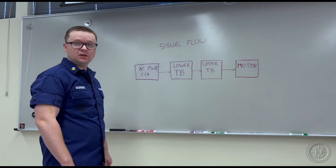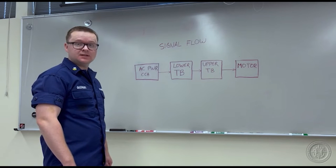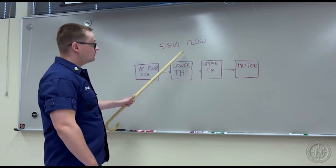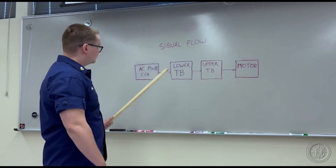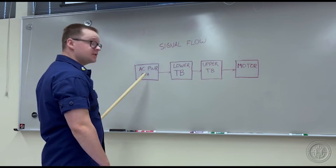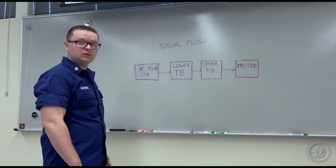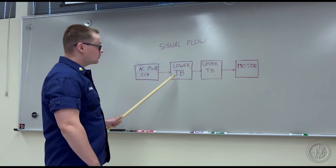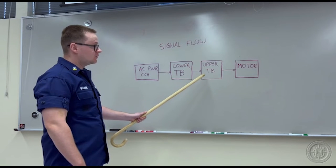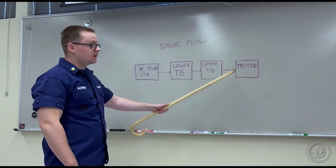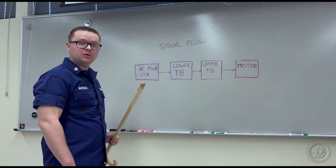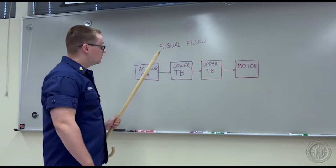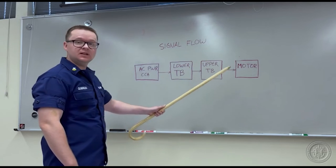The third step to troubleshooting is listing probable causes. Up here I have a signal flow diagram on how DC voltages travel throughout the system. The first source of voltage is our AC power card located in the lower unit, then it goes to the lower terminal board, from there it goes to the upper terminal board and finally reaching your motor. You have to check every single input and output as well as a connection to determine which piece of equipment is at fault.